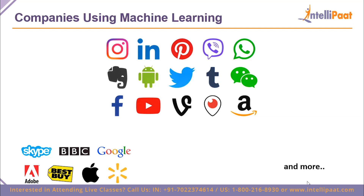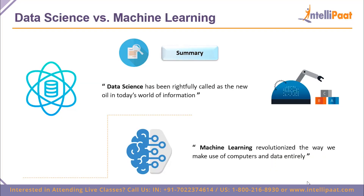To summarize: data science has been rightfully called the new oil of the information age — having data is like having wealth, but just like crude oil must be refined into petroleum or diesel, data science is the tool that refines raw data into something usable. Machine learning has revolutionized the way we use computers, treat data, understand data, and make data work for us. Both are very lucrative, top-ranked careers that are magical to learn, understand, and build a career in.